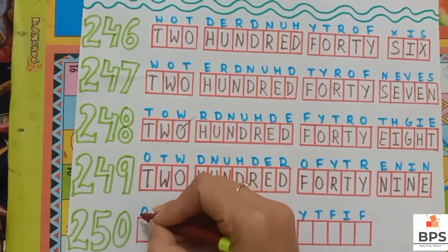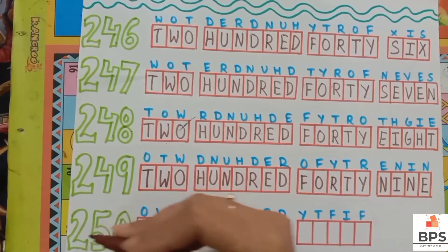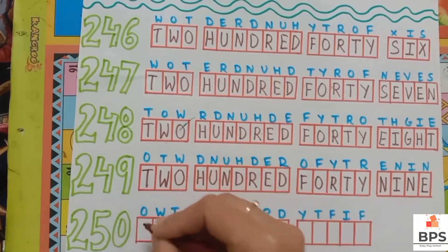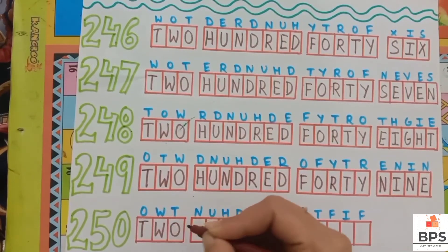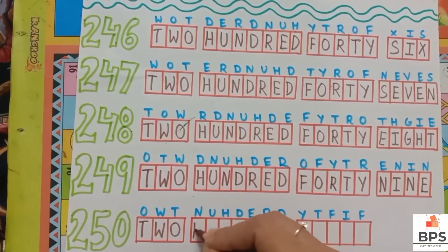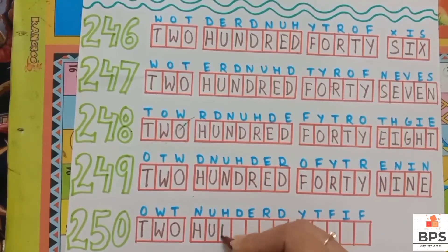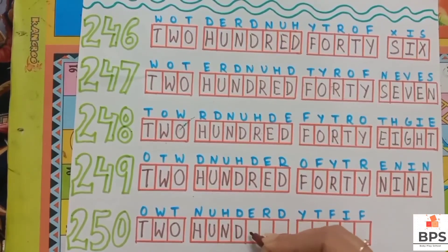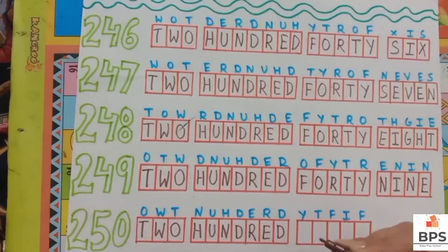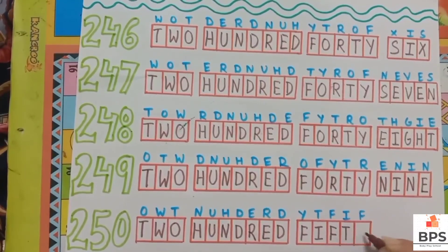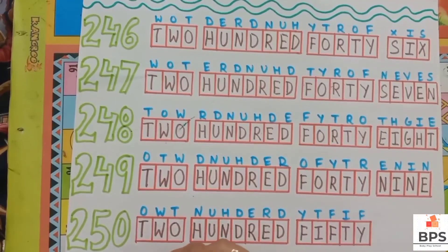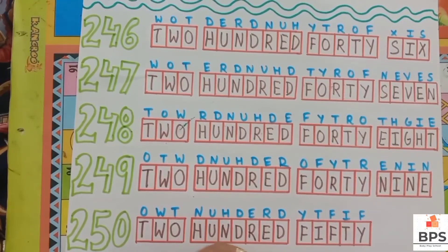Two hundred forty nine, two hundred fifty — 250. T-W-O, 2; H-U-N-D-R-E-D, 100; F-I-F-T-Y, 50. Two hundred fifty — 250.